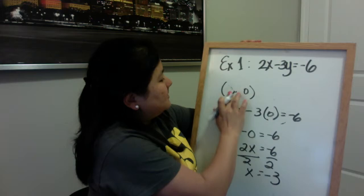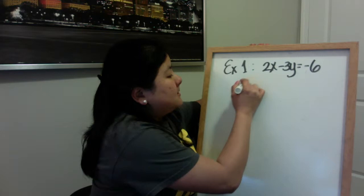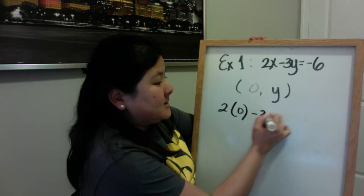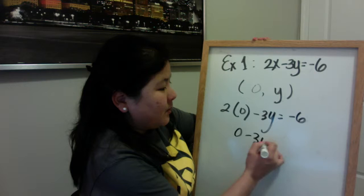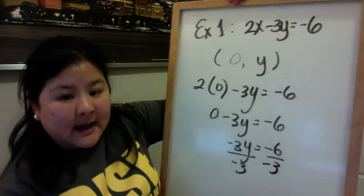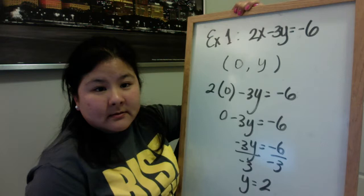Now let's find the y-intercept. I'm looking for the value of y when x is 0. So I'm going to plug in an x value of 0. That gives me 2 times 0 minus 3y equals negative 6. 0 minus 3y equals negative 6. Negative 3y equals negative 6. Divide by negative 3 on both sides. And that gives me y equals positive 2. That means that my y-intercept is 2.